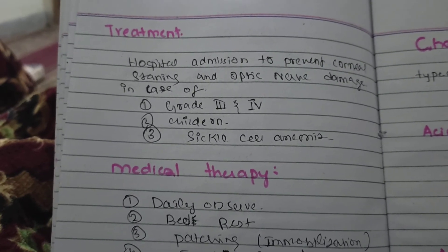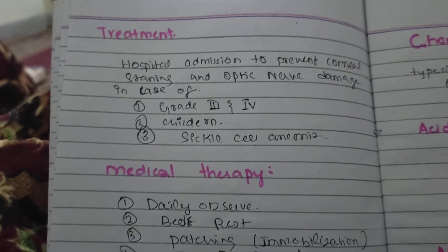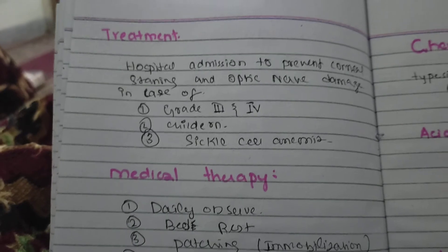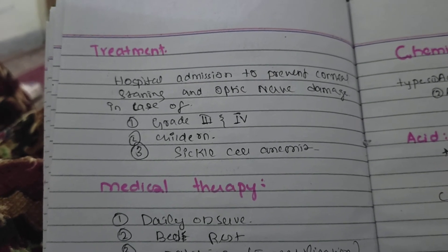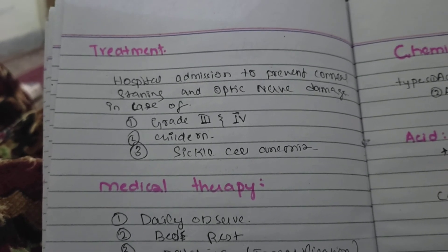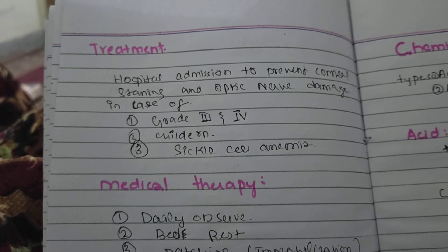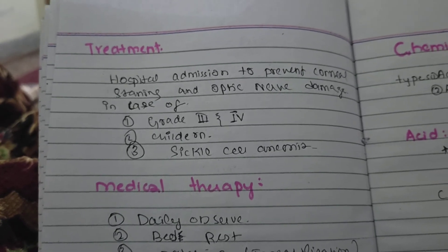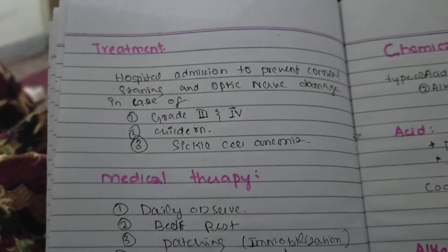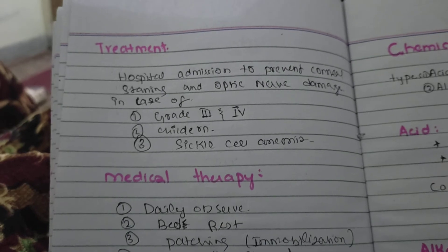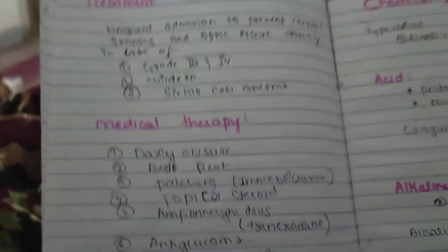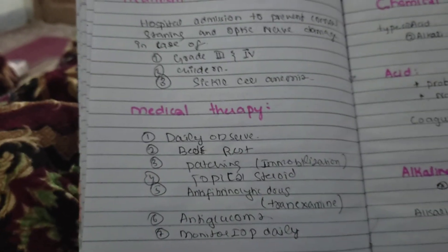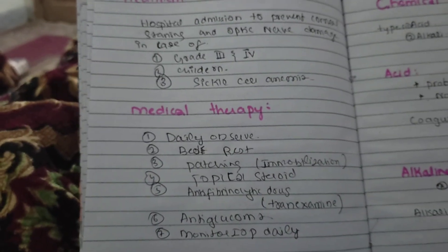If a patient is Grade 3 or Grade 4, which is three-quarters or fully filled, or if it is a child, or if there is a bleeding disorder such as sickle cell disease or hemophilia, then in that case we have to hospitalize the patient properly and then start treatment. Treatment can be medical or surgical.